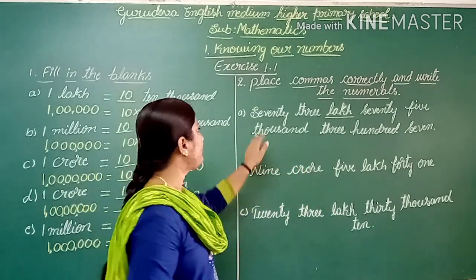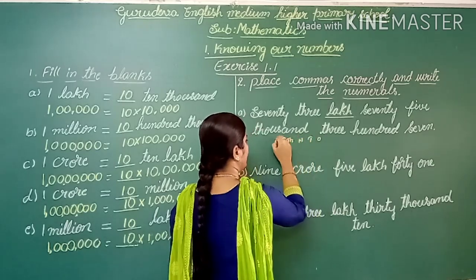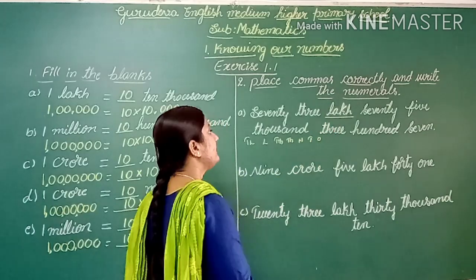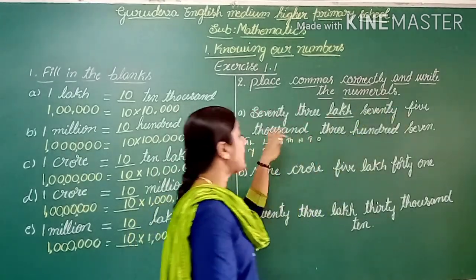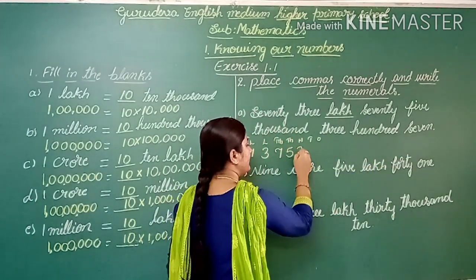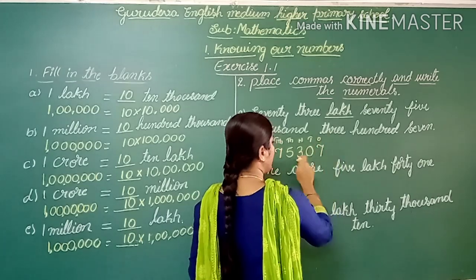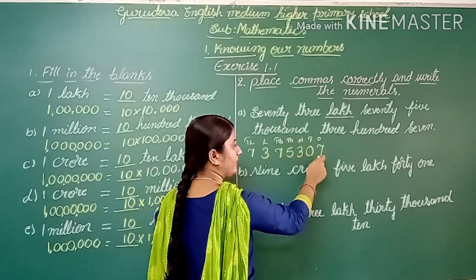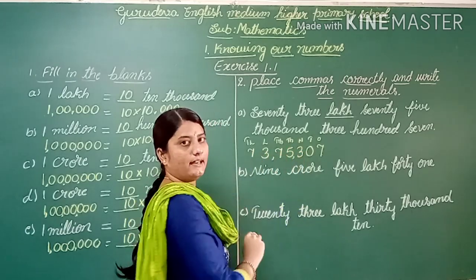We write place values up to 10 lakh: ones, tens, hundreds, thousands, ten-thousands, lakhs, ten-lakhs. 73 goes in the lakh place, 75 in the thousands place, 3 in the hundreds place, 0 in the tens place, and 7 in the ones place. The numeral is 73,75,307 with commas placed according to the Indian system.